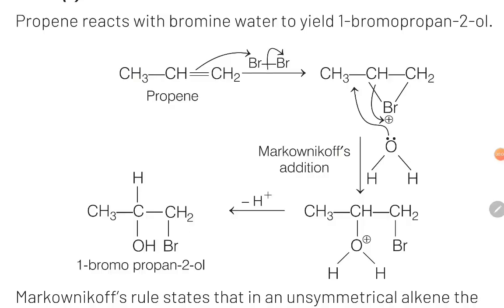You can see here with the mechanism that when an alkene reacts with bromine water, bromine will first attach itself to the double bond, forming a 3-membered ring in which there is a Br⁺ ion. This compound is known as the bromonium ion.